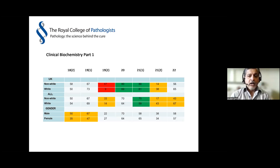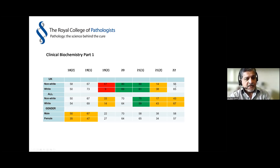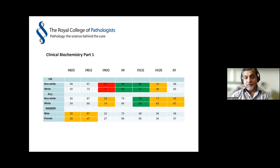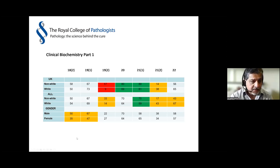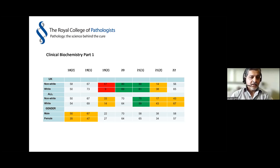Moving on to clinical biochemistry - this is an MCQ exam introduced around 2017-2018. Pass rates are more or less okay recently, and we had a gap where non-white candidates seemed to do better. Whether that's because they're better at a bookwork-type approach I'm not sure, but if so, hematology would be expected to show similar results. The question of overseas candidates does come up, as the overall pass rate seems to go down when there are more overseas candidates.